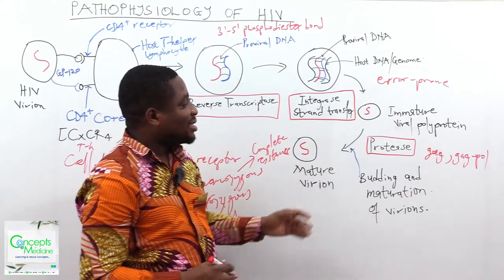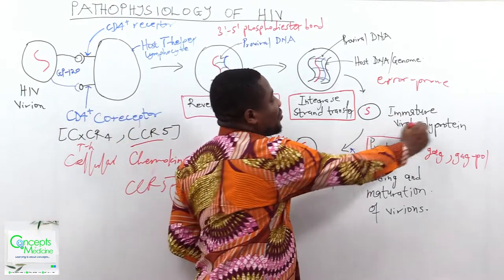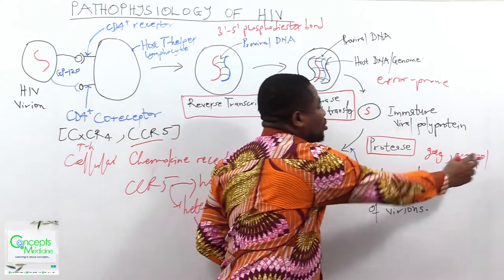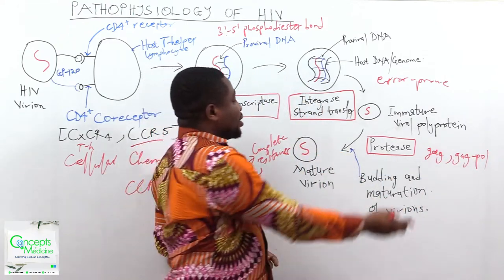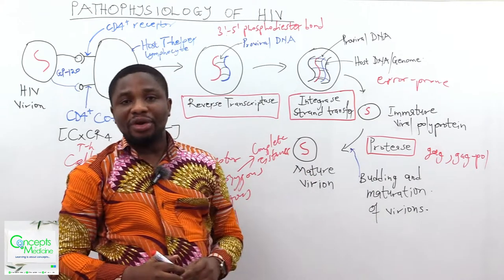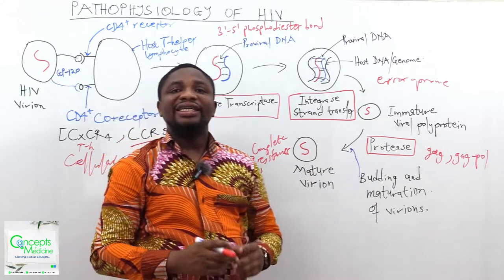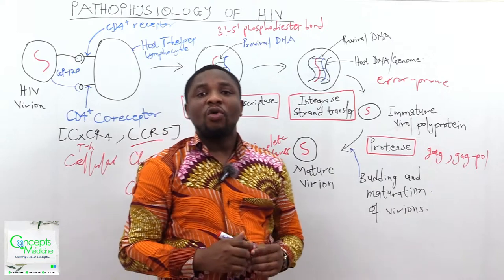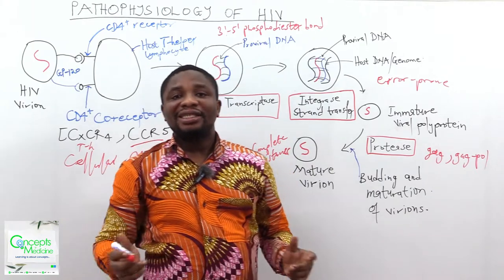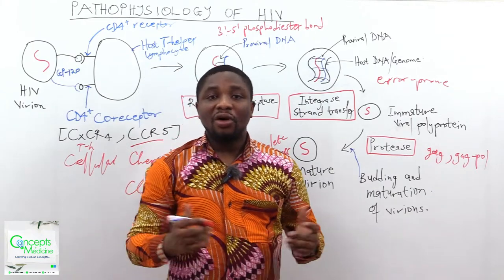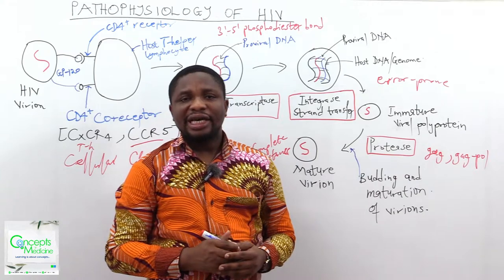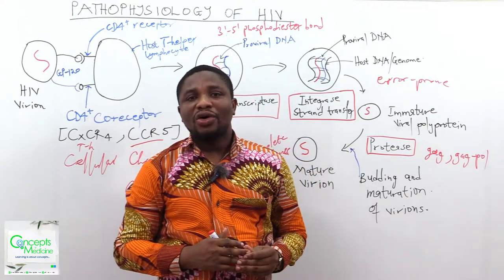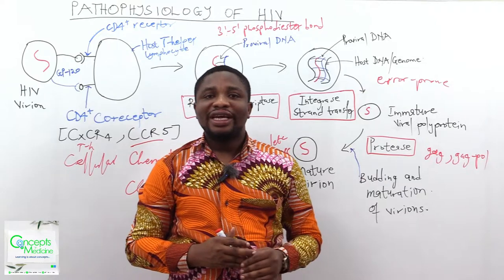The protease cleaves the immature viral polyproteins — the GAG and GAG-POL polyproteins — into the mature virions. These mature virions are then liberated into circulation, where they affect other cells and structures. These steps constitute the pathophysiology of HIV.